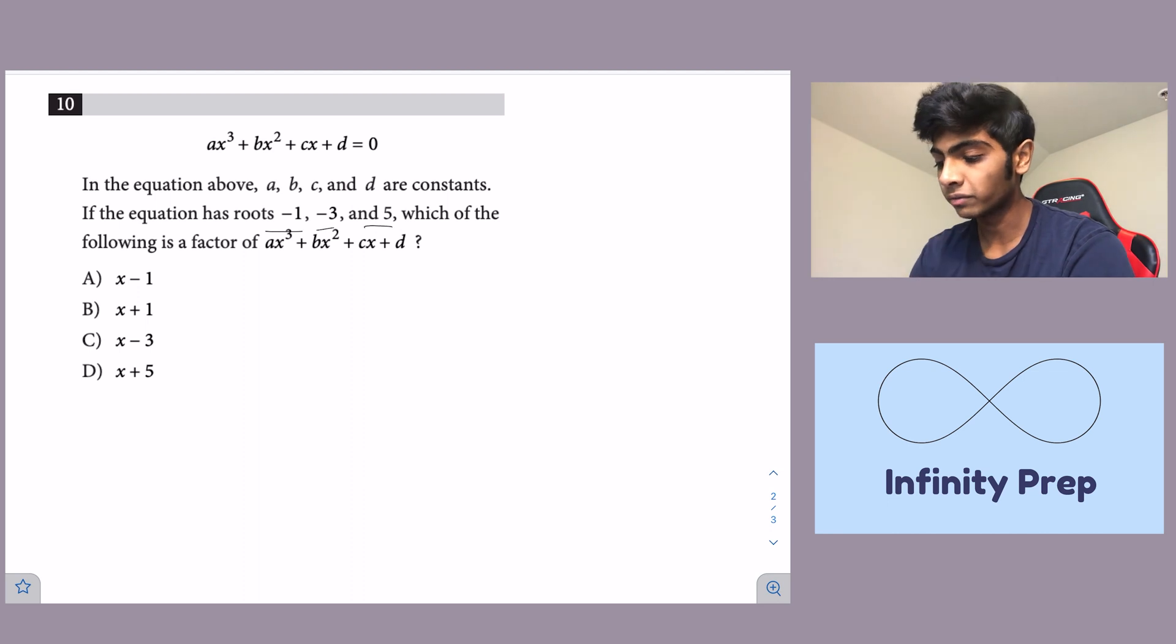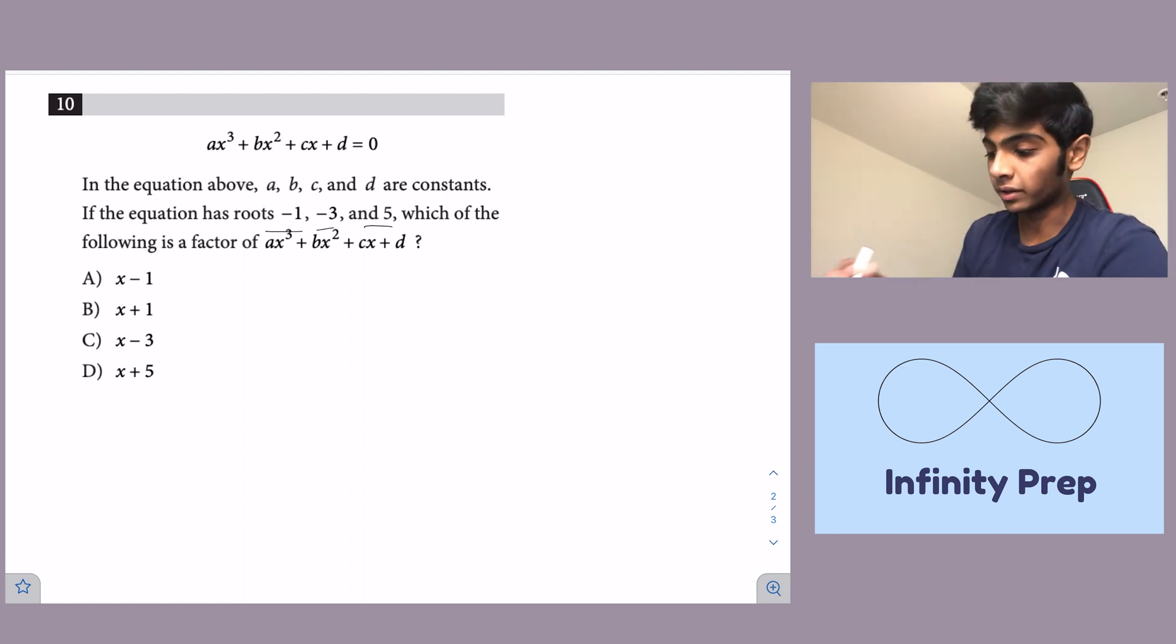Now to do this, all we really have to do is notice that it's given us the roots, which are negative 1, negative 3, and 5, and it's given us four answer choices. So all we have to do to find which one of these is the roots is, well, they've already given us the roots.